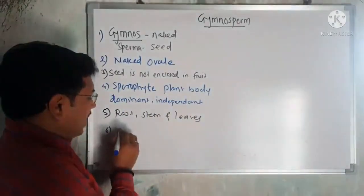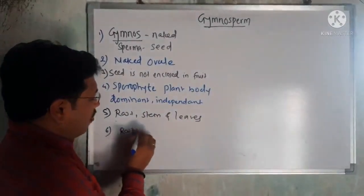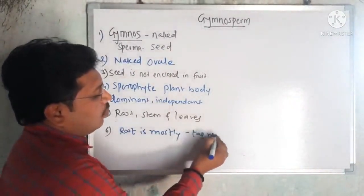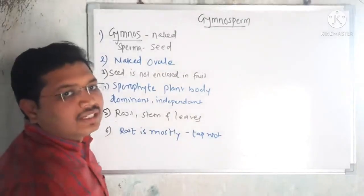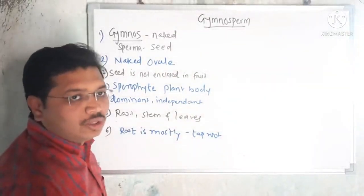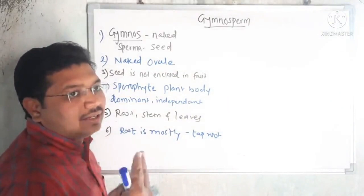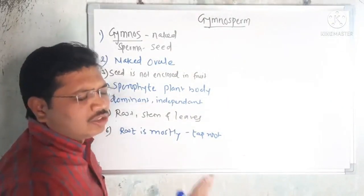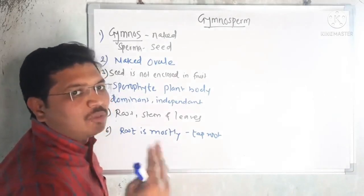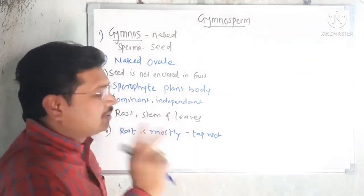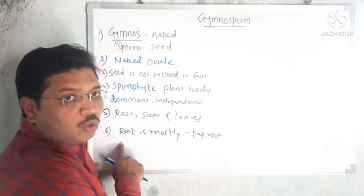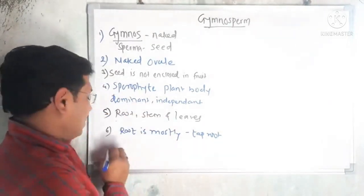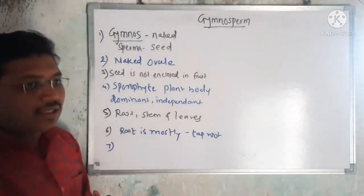The root in gymnosperms is mostly a tap root system. We know there are two types of root systems: adventitious root system and tap root system. Dicots have a tap root system and monocots have an adventitious or fibrous root system. In gymnosperms, the tap root system is mostly present.